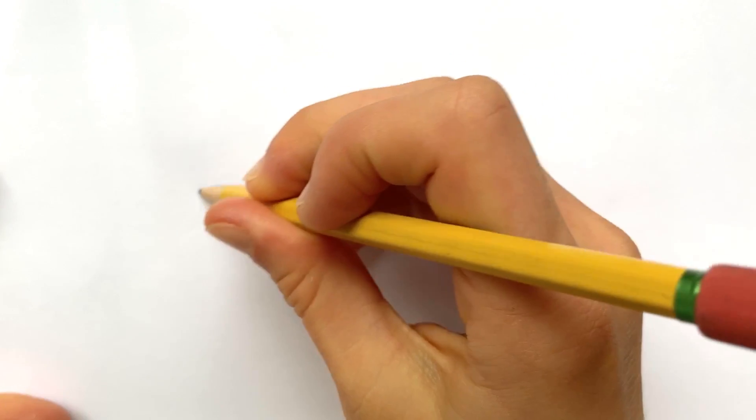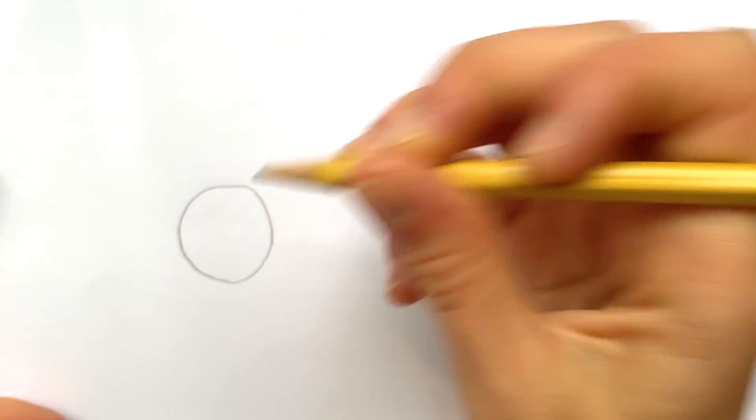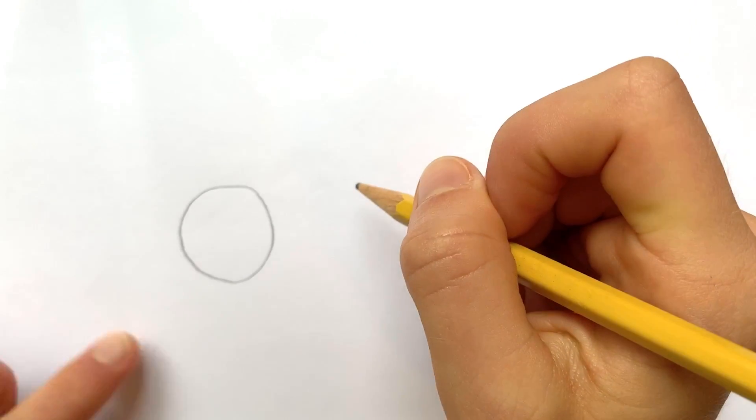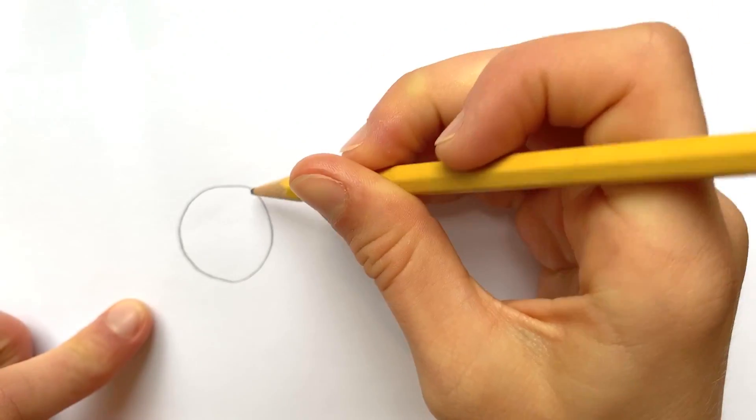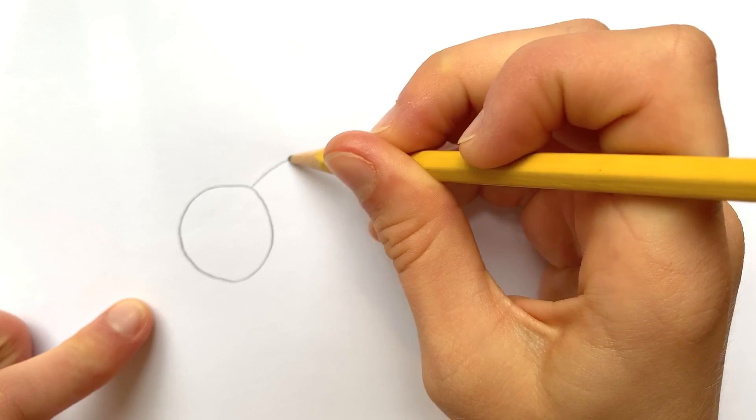We're going to start with a circle. Everybody can do a circle - boom, circle. Then from this point we're going to do... and you can watch me first before you do it if you want.